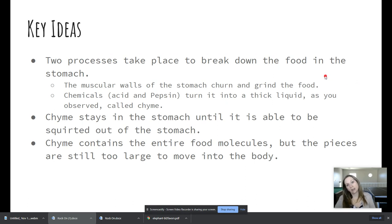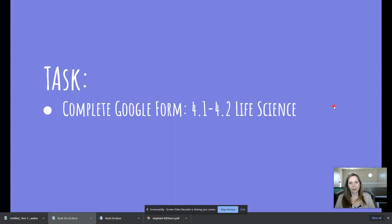So two processes are taking place to break down the food in the stomach. We have the muscular walls of the stomach, churn and grind the food. And then chemicals, acid and pepsin, turn it into a thick liquid as you observed. And it's called chyme. Chyme stays in the stomach until it is able to be squirted out of the stomach. And chyme contains the entire food molecules, but the pieces are still too large to move into the body. So they got to go through some more processes that we will be learning about.